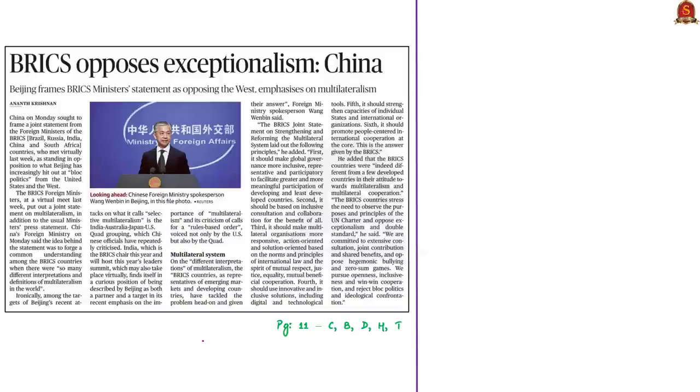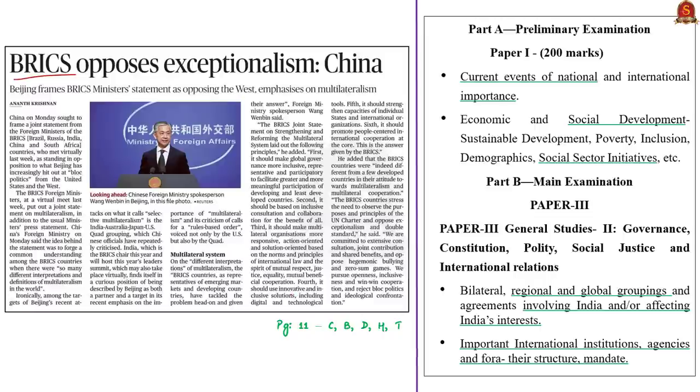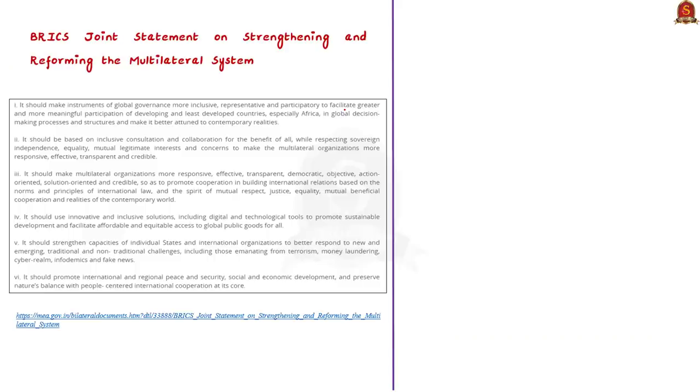Now, let us take up this article. This article is related to the recently concluded virtual meeting of the foreign ministers of the BRICS. Post meeting, the Chinese foreign ministry has said that BRICS opposes unilateralism and opposes the bloc politics promoted by the United States and the West. In this context, let us discuss important points given in the article and let us also learn about the institution of BRICS. The syllabus for reference is displayed on the screen. Aspirants can go through it. First of all, let us understand the important points in the recently passed BRICS joint statement. This joint statement is on strengthening and reforming the multilateral system. So, what are the important points?